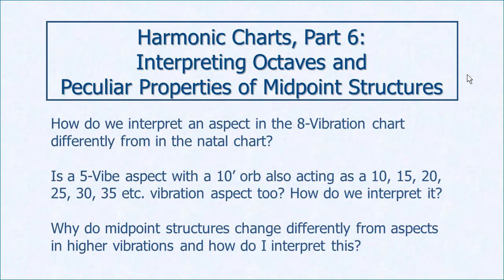Hello. Our topic for today is interpreting octaves. In vibrational astrology, octaves means you take a number and double it. For example, you take five vibration and double it — the octave above five is ten, above ten is twenty, then forty, eighty, and so on. You can start with any number and double. We call those octaves because when you double a vibration, it does not change the essential meaning of it.